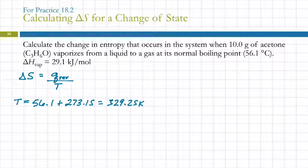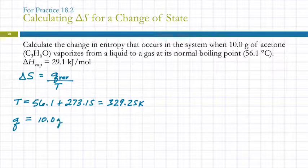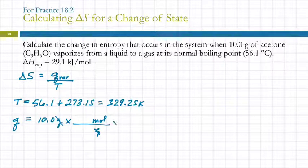Then we need Q. We're given the heat of vaporization. This tells us that if one mole of acetone evaporates, Q is going to be 29.1 kilojoules. How many moles of acetone do we have? We can figure that out. We can take the 10 grams of acetone and convert that to moles of acetone.